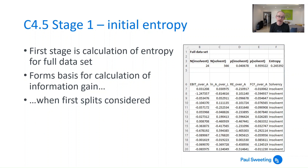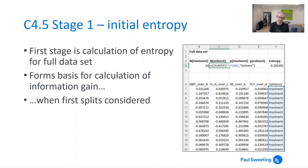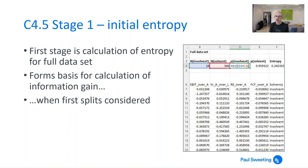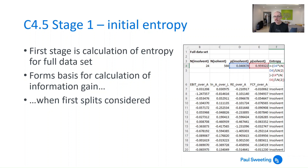The first stage is calculating initial entropy for the full dataset. This forms the basis for the calculation of information gain, because information gain has to be gained from something — and that something is the entropy of the full dataset. We've got this data here, with the first few lines visible. The number insolvent is simply a COUNTIF based on the insolvent data, and a COUNTIF for solvent as well, giving us 24 insolvent and 566 solvent. The proportion of insolvent and solvent firms is then calculated, and the entropy is calculated from those proportions multiplied by the log of those proportions.